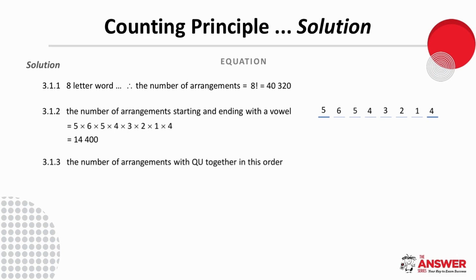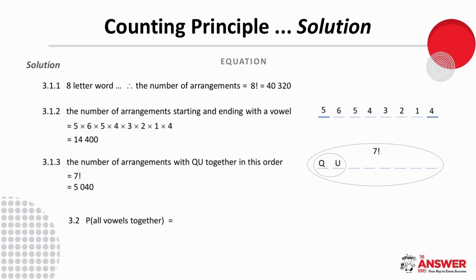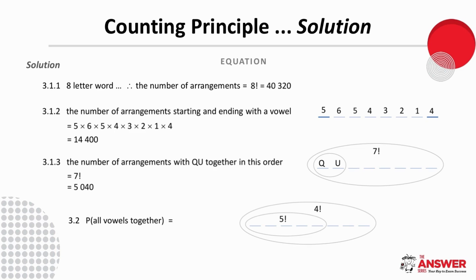To find arrangements where Q and U stay together in order, we place 8 slots and group Q and U as a fixed unit. This gives 7 factorial arrangements, so the number is 5040. For 3.2, to find the probability that all vowels are together, the 5 vowels can be arranged 5 factorial ways amongst themselves, and then with the vowels acting as 1 slot, there are 4 factorial ways to arrange the remaining places. The probability is 5 factorial times 4 factorial over 8 factorial, which is 1 over 14.